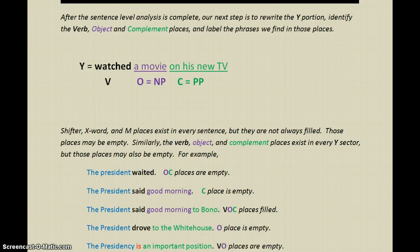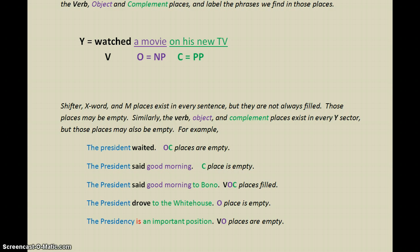It's important to understand that shifters, X-words, and M-places exist in every sentence, but they're not always filled — those places may be empty. Similarly, the verb, object, and complement places exist in every Y, but those places may also be empty. Every sentence must have a Y, so we'll have a verb, object, or complement in the Y-place, but we may not always have all three, or even two of those — but we'll always have at least one.